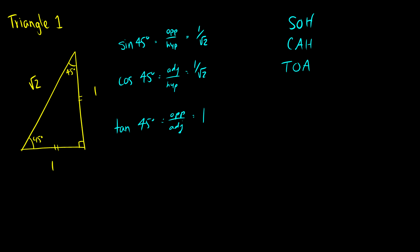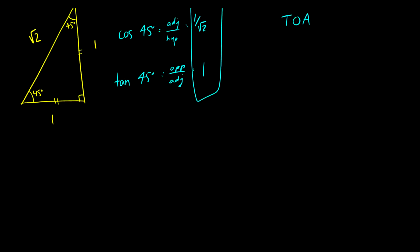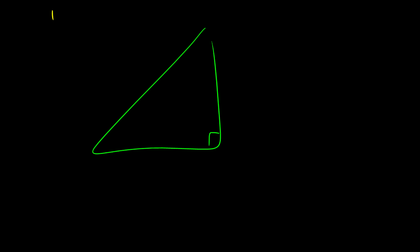It's a good idea to memorize these values — it will speed up your calculations a lot on tests. However, knowing how to construct the triangle is much more important. On a test, as soon as you get it, draw the triangle: put a 1 on each leg, deduce from the equal legs that the angles must be 45 degrees, and by Pythagoras the hypotenuse is √2. Then you can figure out everything from there. That's a good trick.